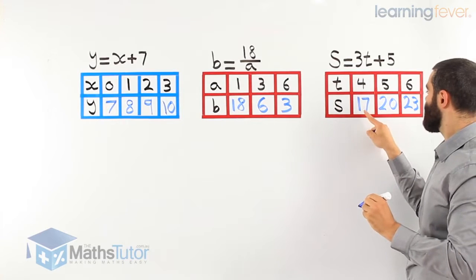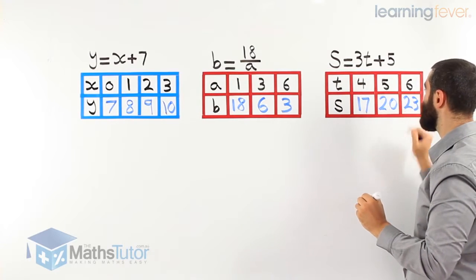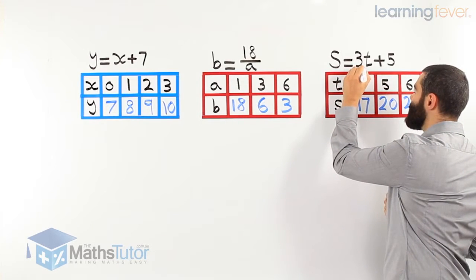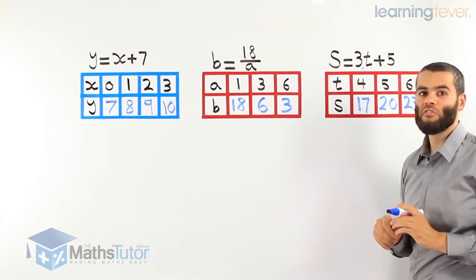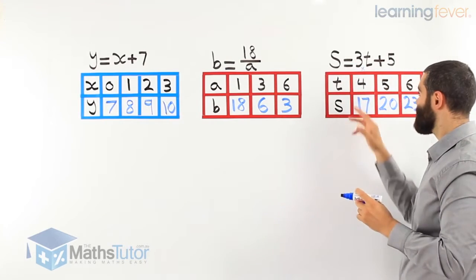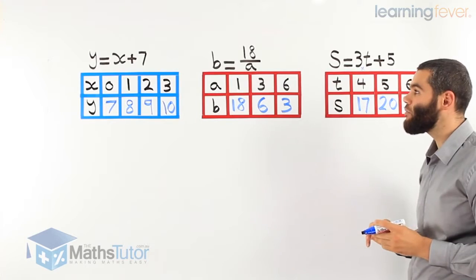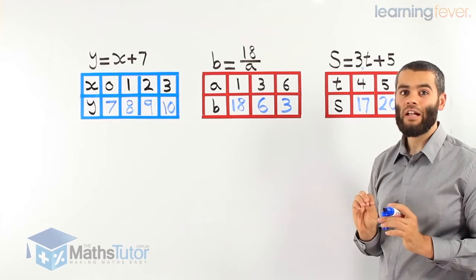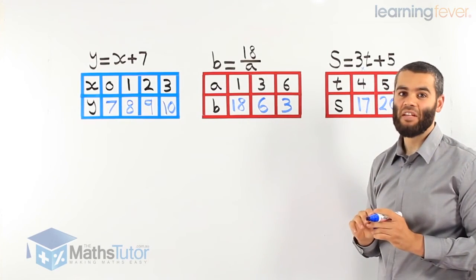As you can see, the pattern is going up by 3s for this rule here. Now, very important to remember that there is a times here. That's one of the rules of algebra, that 3t is 3 times t. So here we completed the tables of values using the rules we have. Very simple. If you know your substitution and your algebra, this is going to be a piece of cake.